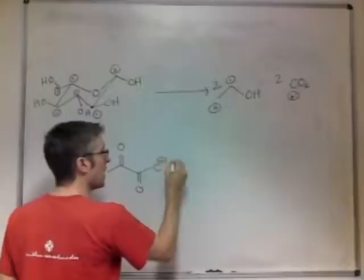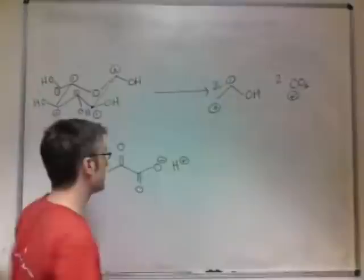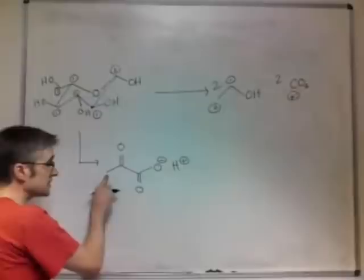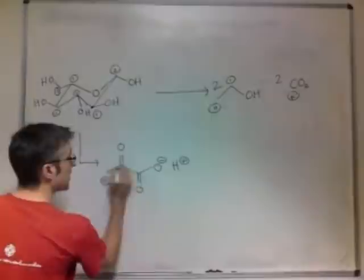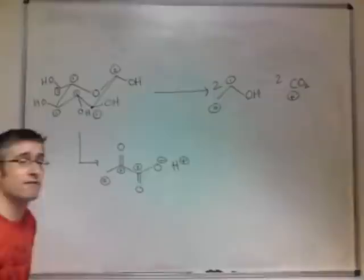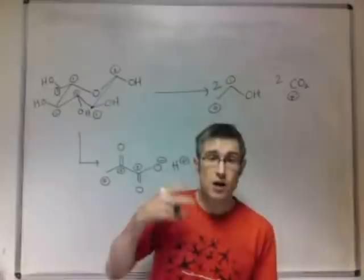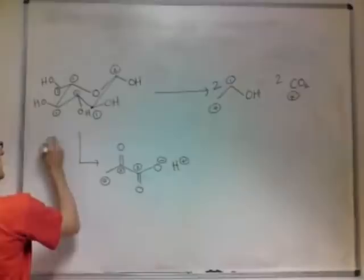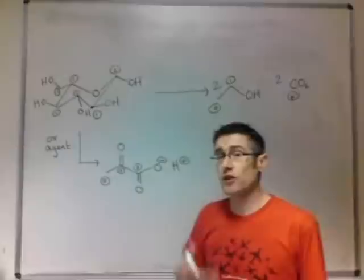This is pyruvic acid. The pyruvate anion is the ionized form, which is what will exist at pH 7. What you notice in this structure is that this carbon is oxidation level zero, this carbon is oxidation level two, and this carbon has oxidation level three. Some of these carbons have been oxidized from the framework of glucose, and this process requires an oxidizing agent. We use a biological oxidizing agent called NAD+ which gets converted to NADH.